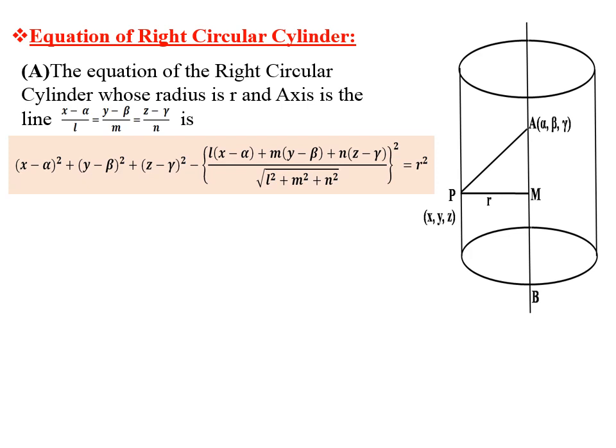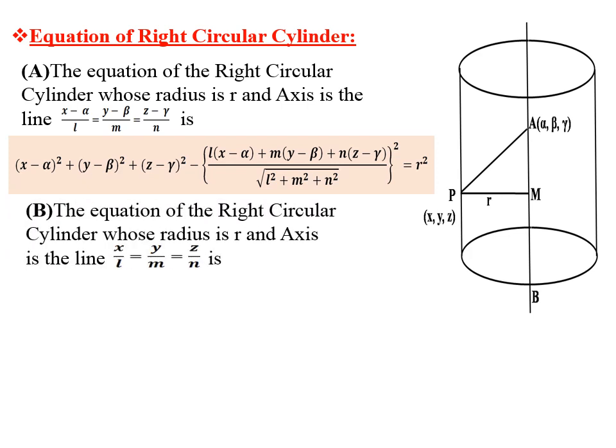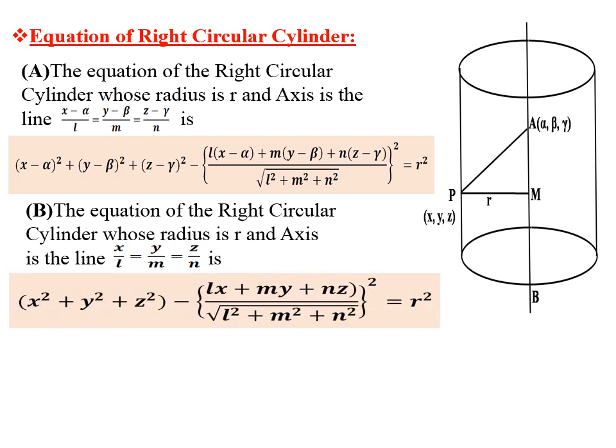Case 2: The equation of RCC whose radius is r and whose axis is the line x/l = y/m = z/n. Here the fixed point A is at the origin, meaning α = β = γ = 0. Substituting into the first equation, we get: x² + y² + z² − [(lx + my + nz) / √(l² + m² + n²)]² = r².